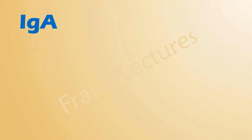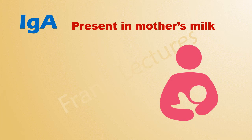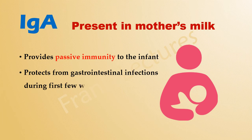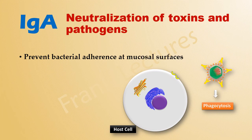Let's now talk about the functions of IgA. IgA is the major antibody found in the colostrum of milk in nursing mothers, providing passive immunity to the infant. It protects the infant from gastrointestinal infections during the first few weeks after birth. IgA also neutralizes toxins and pathogens, and prevents pathogens' adherence to mucosal surfaces, blocking them from entering the bloodstream.